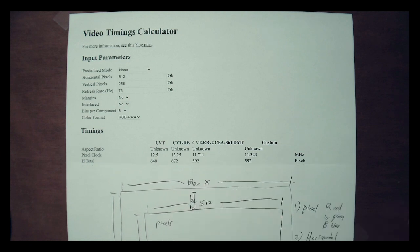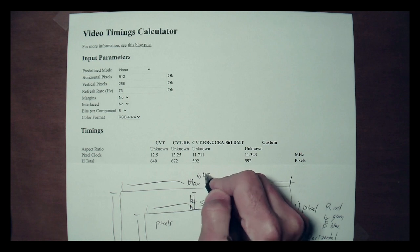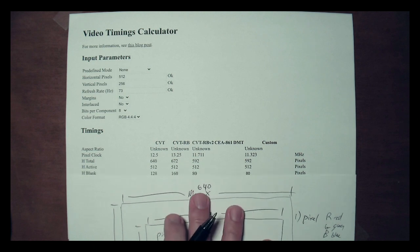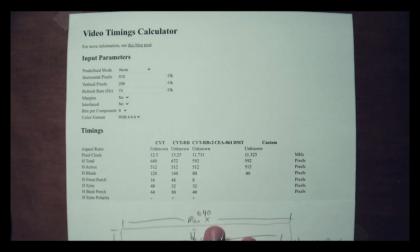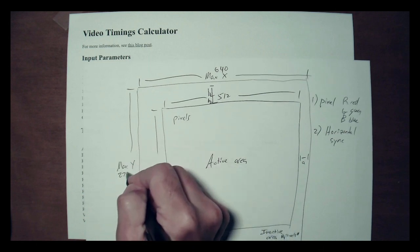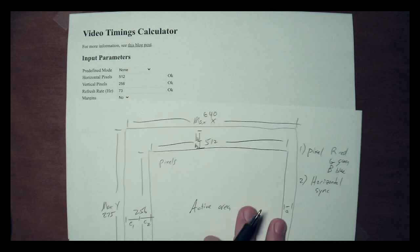Scrolling down, we see V total is 275. So we're dealing with a total pixel area of 640 by 275. Of the 640 horizontal pixels, only 512 are active, meaning the number of blanking pixels is 128. That blanking consists of C1 (the horizontal sync), C2 (back porch), and A (front porch), so H blank equals C1 plus C2 plus A.